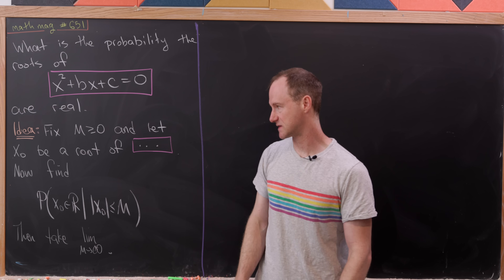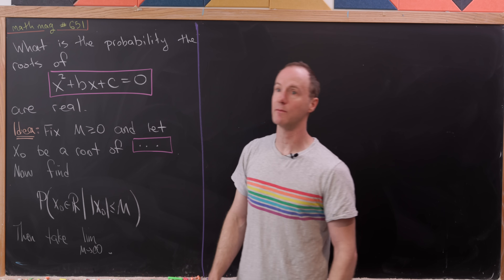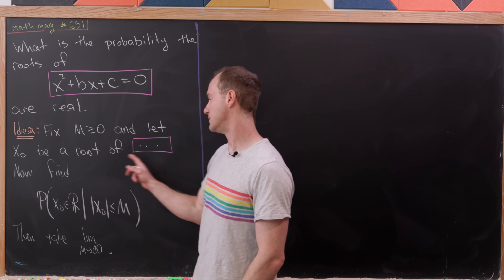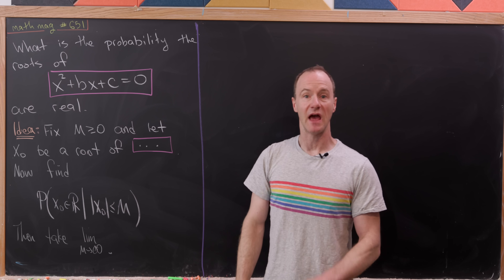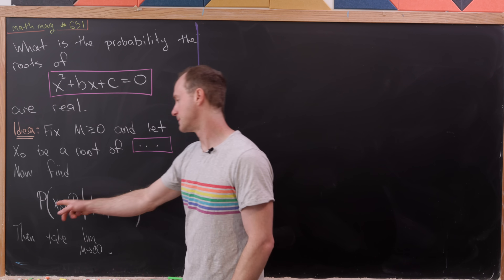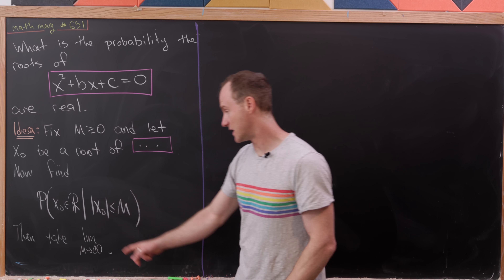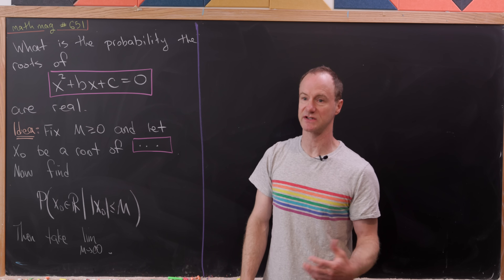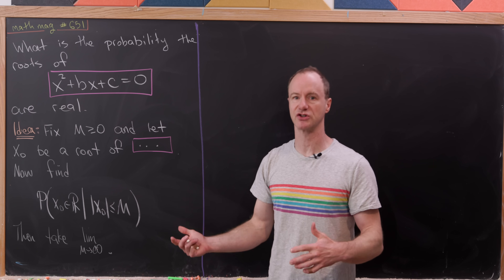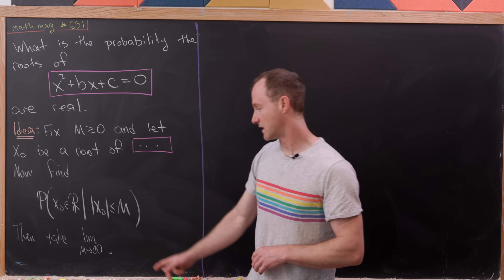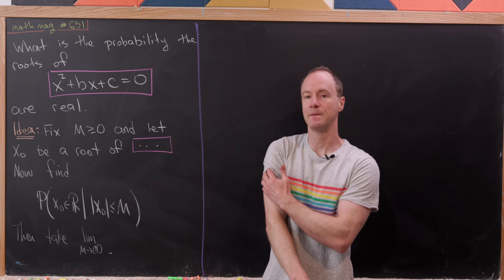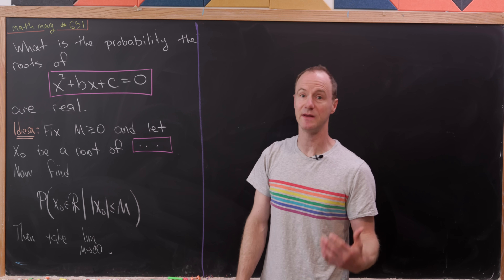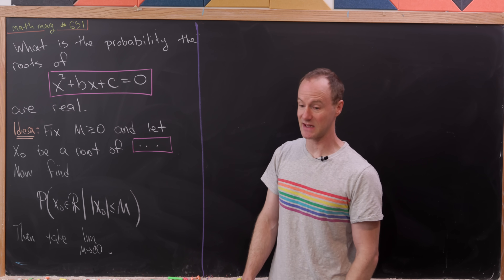So what's the idea behind our process? We're going to fix a number m — a real number bigger than or equal to 0. Then we let x₀ be a root of our equation, and calculate the probability that x₀ is real given that the modulus of x₀ is less than or equal to m. Finally, we'll take the limit as m approaches infinity. This conditional probability could depend on m, which is why we need that limit.